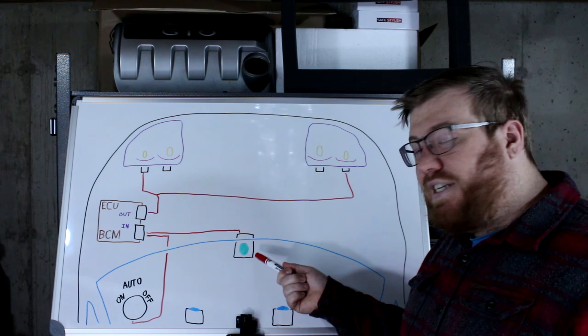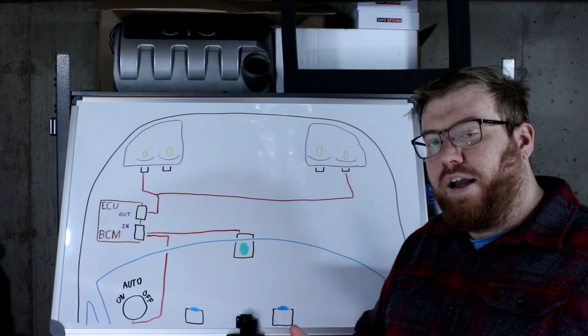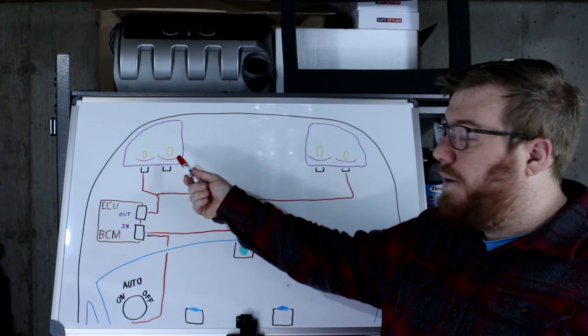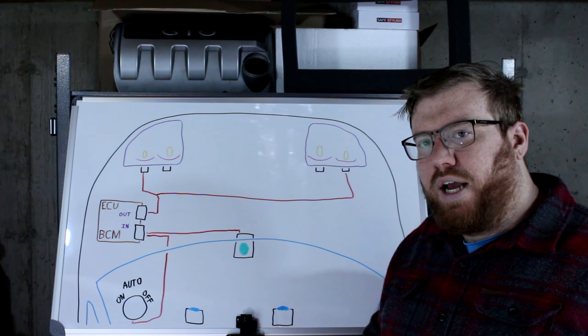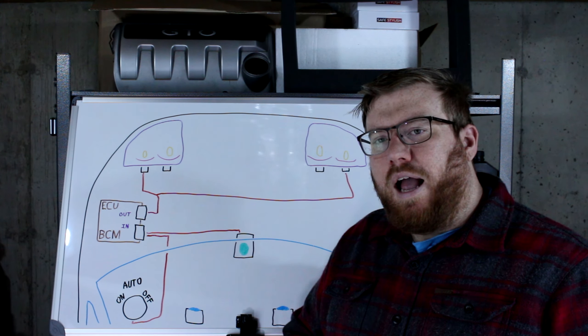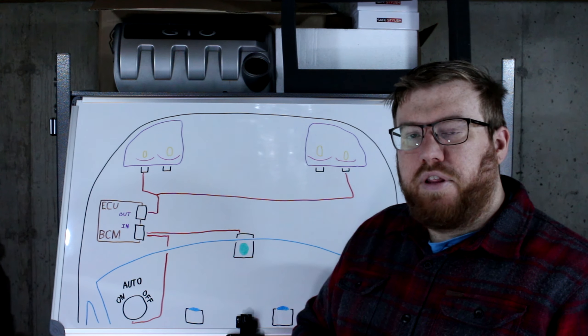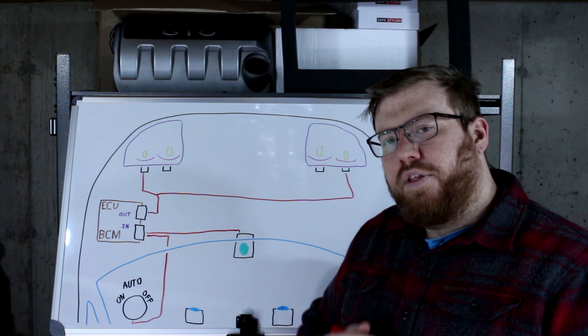Because of the location however, this sensor can't be used to control automatic high beams. More data has to be considered in order to get those high beams to turn on and off at the appropriate times. If you'd like to learn how automatic high beams work, click on this video right here. Otherwise, I hope to see you in the next Car Simplified video, and thanks for watching.